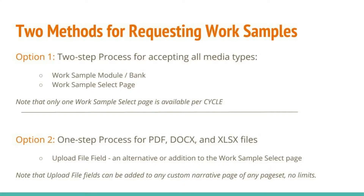Now that we've covered some definitions, let's talk about the two methods for requesting Work Samples in Go Smart. Option one is a two-step process for both you and your applicants for accepting all media types. This will make use of the Work Sample Module and Bank, and the Work Sample Select Page. Note that only one Work Sample Select Page is available per cycle.